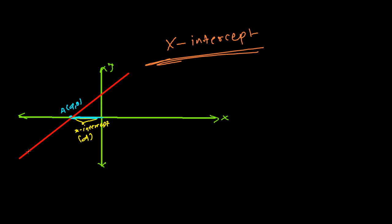Now let me imagine a general point on line L. Let's say P is a general point on line L with coordinates (x, y). We also know the slope of this line. Line L is making an angle θ with the positive direction of x, measured in the anti-clockwise direction. So θ is the inclination, and tan θ is our slope.